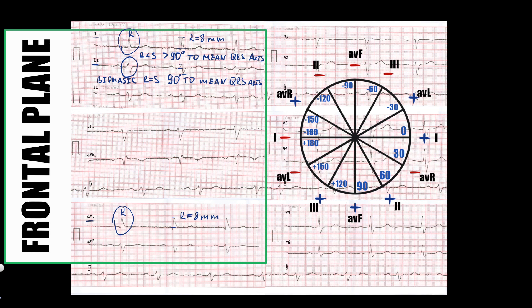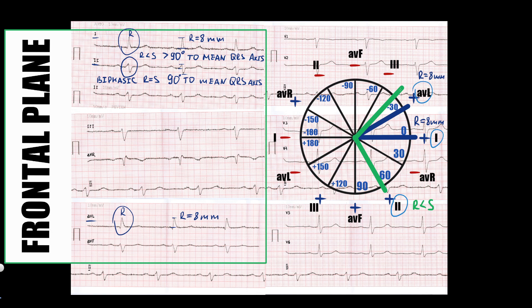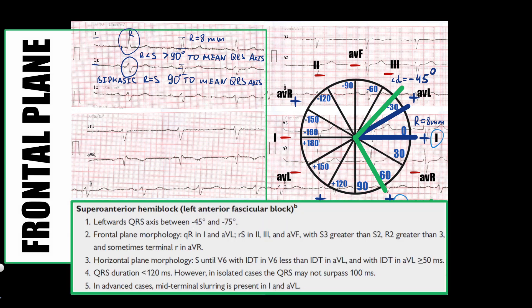Using the hexaxial diagram, we mark the lead with the high R-wave, then mark the lead with the biphasic complex. If R and S had been equal, the mean QRS axis would be minus 30 degrees. But since R is smaller, the mean QRS axis is more negative than minus 30 degrees. Therefore, the alpha angle of the mean QRS axis is minus 45 degrees, and the first criterion of left anterior fascicular block is present.